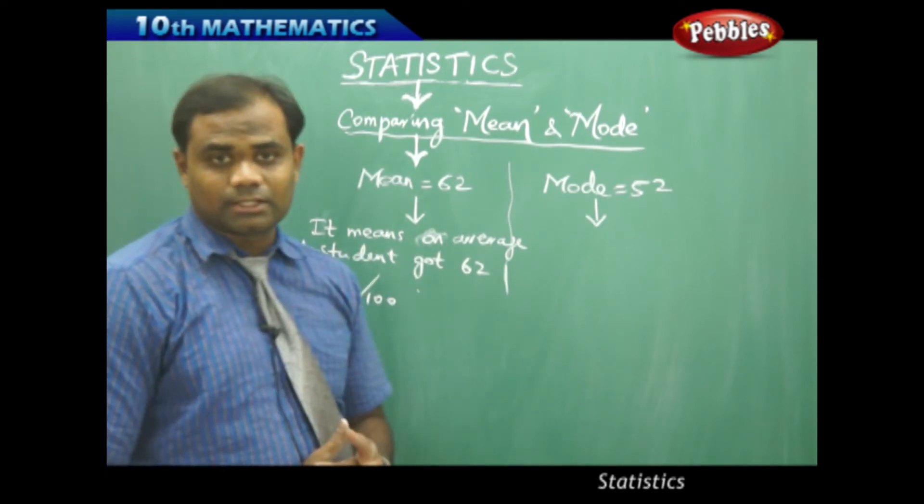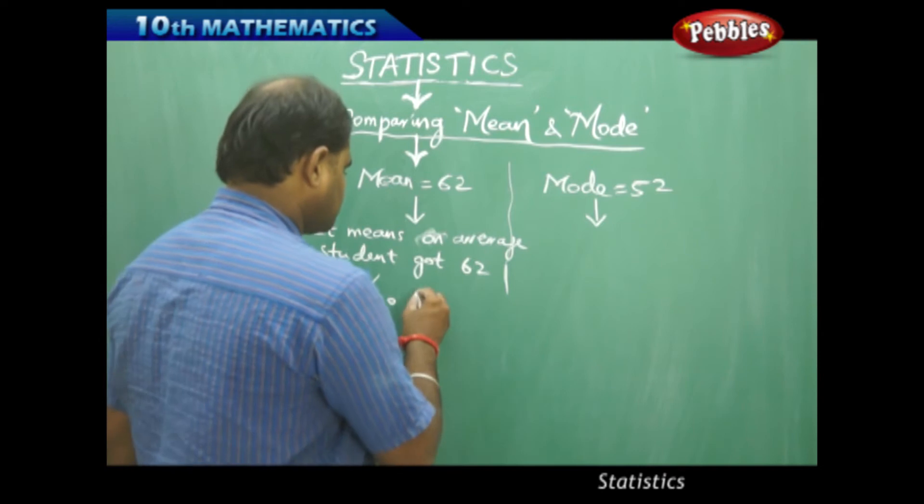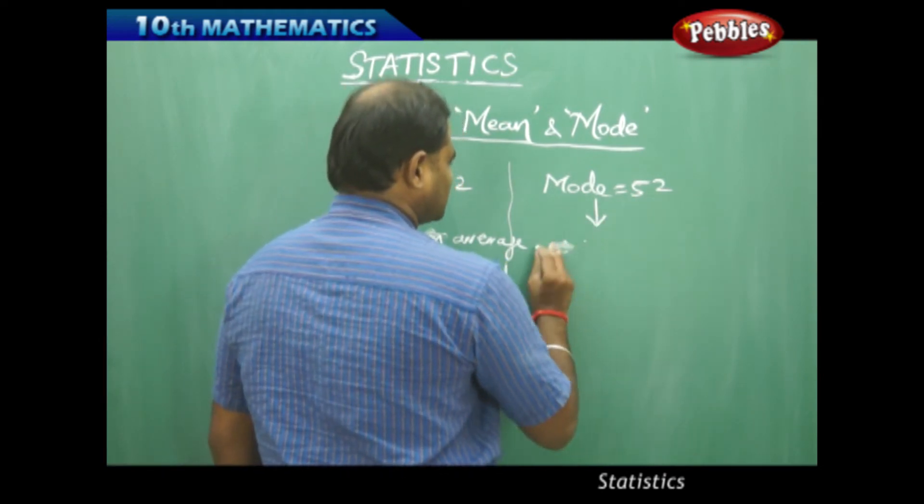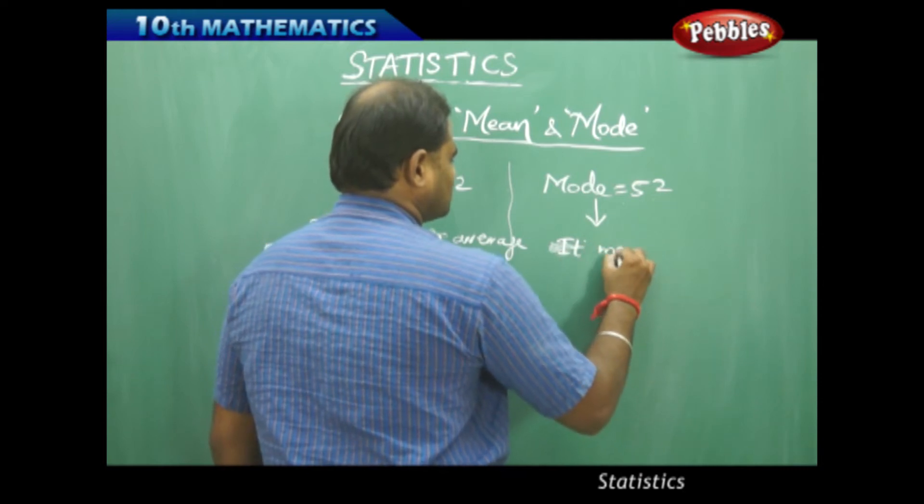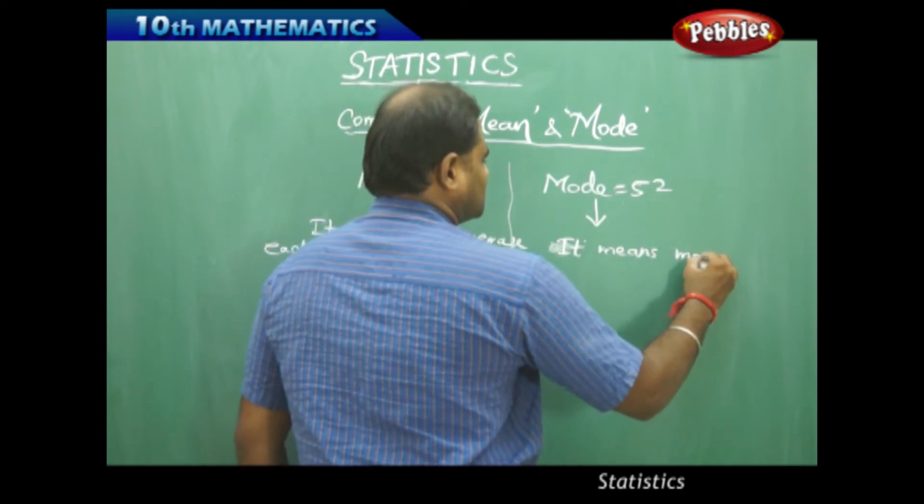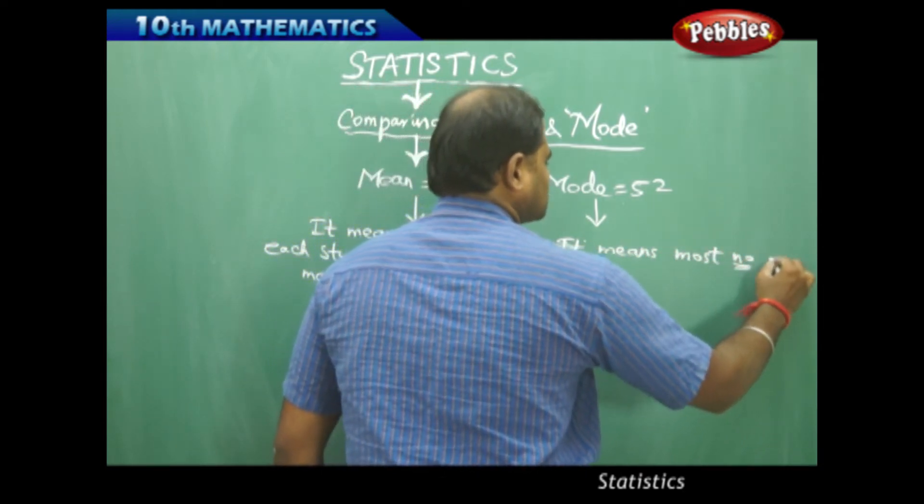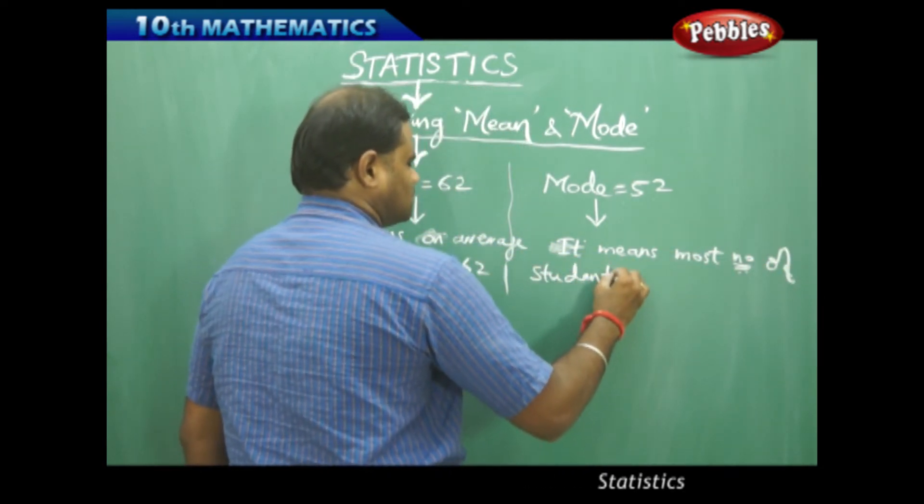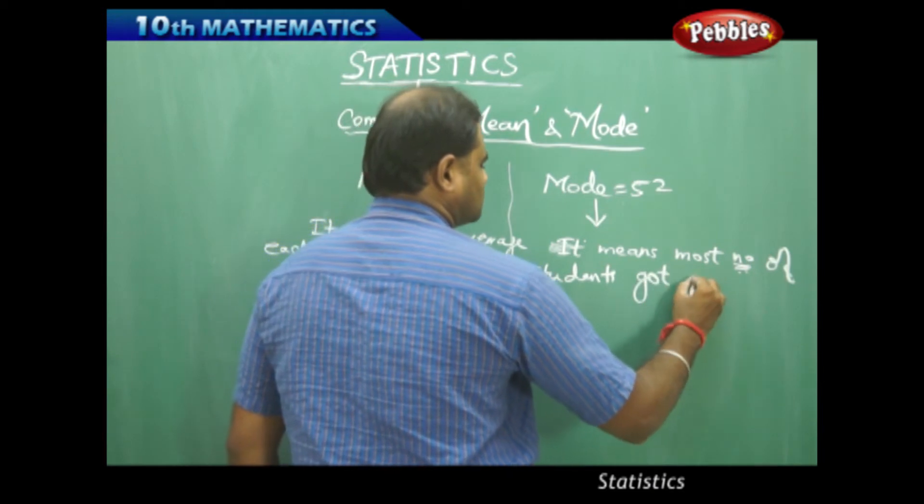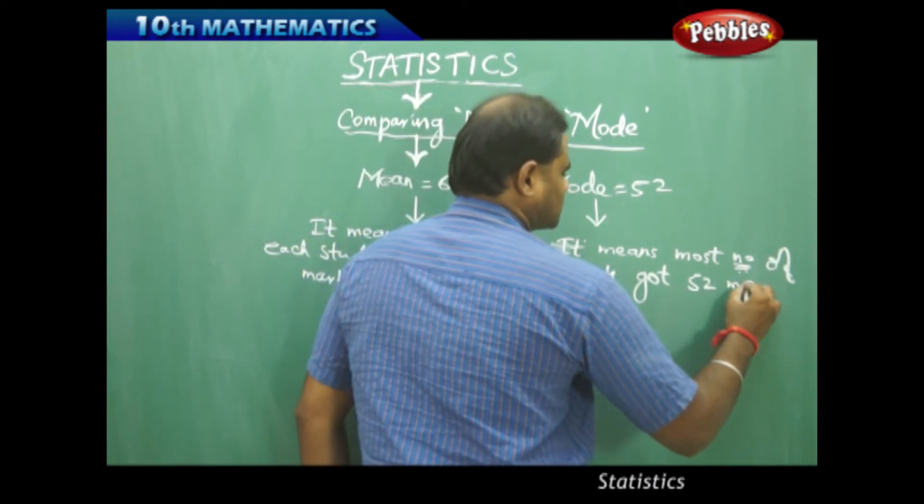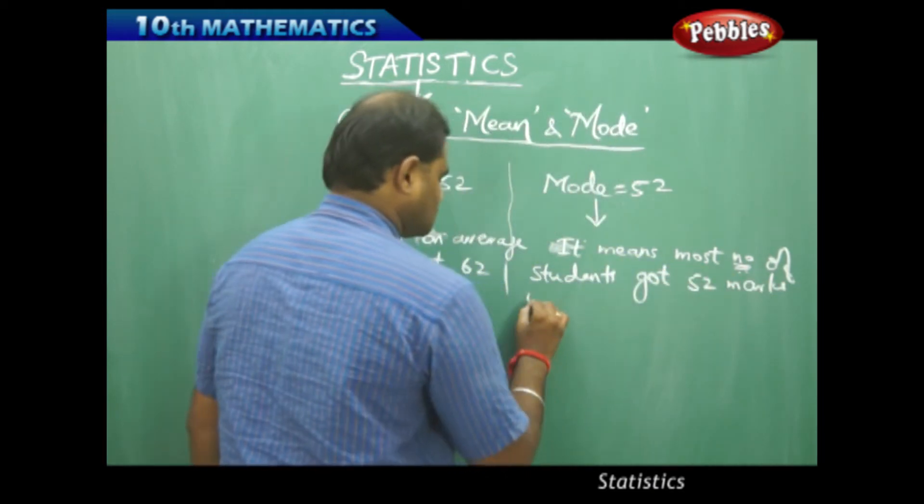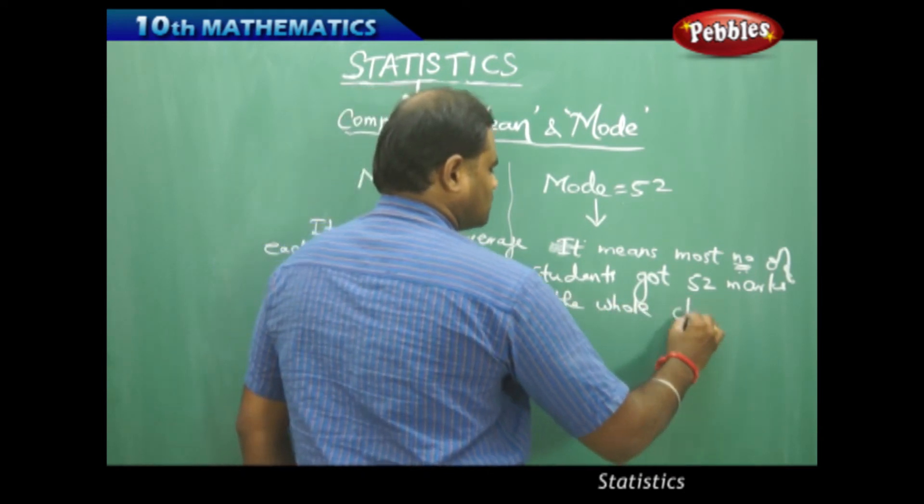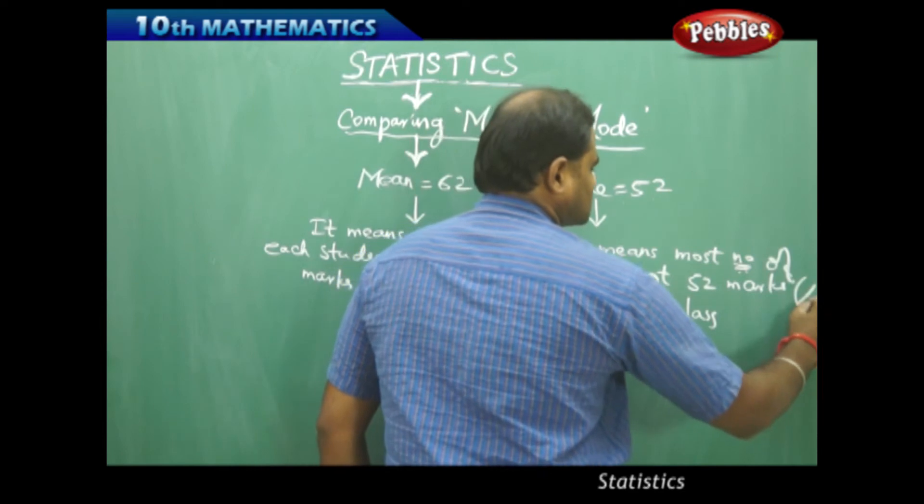Similarly, mode equal to 52 implies it means most number of students got 52 marks in the whole class, of course out of 100.